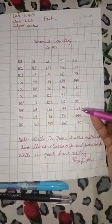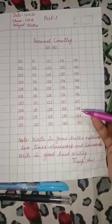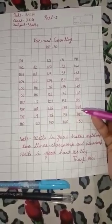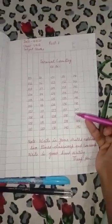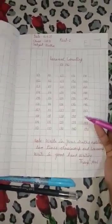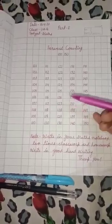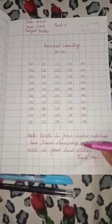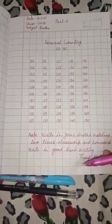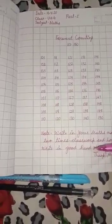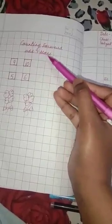What is Forward Counting? Forward Counting is counting by adding one more every time. For example, counting forward add one more.